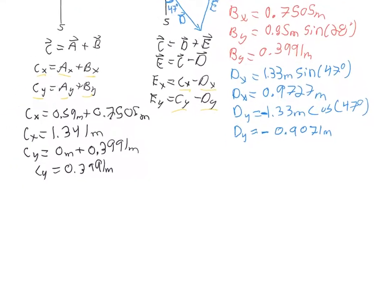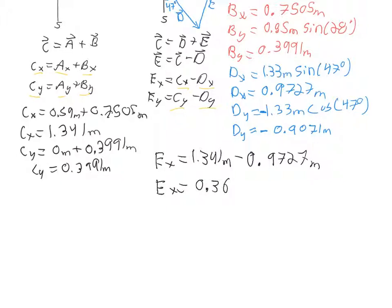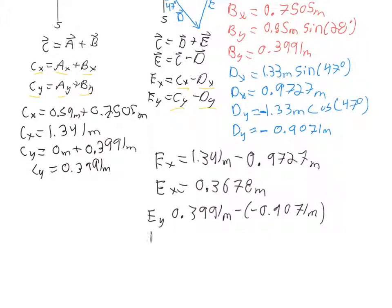Now I can find ex and ey. ex = cx − dx = 1.341 − 0.9727 = 0.3678 meters. For ey = cy − dy = 0.3991 − (−0.9071), which becomes addition, giving ey ≈ 1.306 meters.